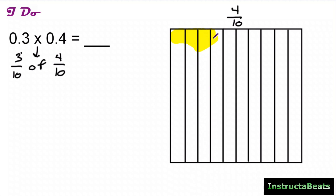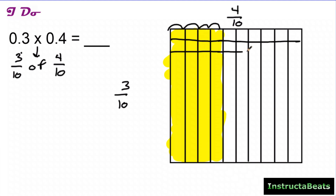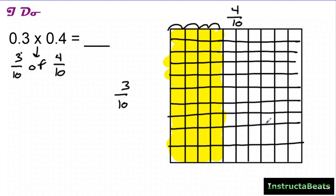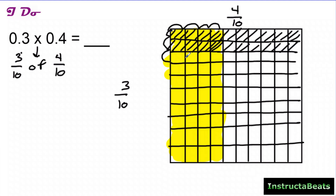I shade in 4 of the 10 pieces — that's what I'm starting with, 4 tenths. Now I want to know what is 3 tenths of those 4 tenths. I split my area model into 10 equal groups going horizontal, then shade in 3 tenths using diagonal lines, shading all the way down. I like to shade in the whole equal group because fractions are equal groups — so that's 2 tenths, then 3 tenths right there.